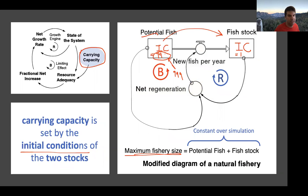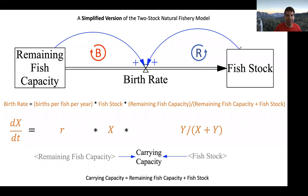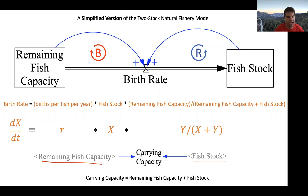Taking this model and redrawing it cleanly, we get a fish stock on the right, a remaining fish capacity on the left, and a birth rate with a balancing loop on the left and a reinforcing loop on the right. In VenSim you can create shadow variables — remaining fish capacity is just a copy of the stock above it, and fish stock is just a copy of the stock above it — and then create a little summing variable for carrying capacity. This would allow you to have a variable that keeps track of total carrying capacity, which you could route into formulas that depend on it.